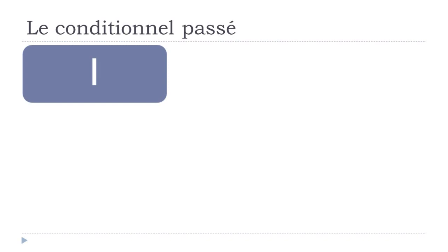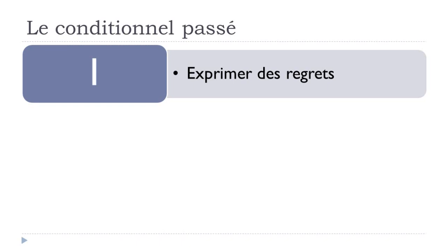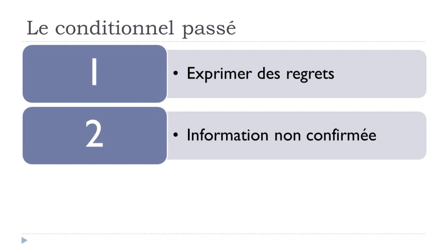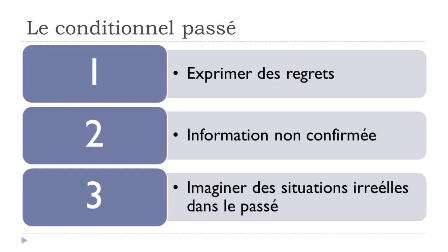First we'll see l'utilisation — when we use the conditionnel passé — and then la formation — how to build it. The first use is to express regrets — exprimer des regrets. The second use is for unconfirmed information — une information non confirmée. For instance, in the news when something happened but hasn't been fully confirmed. And the third use is to imagine unreal situations in the past — imaginer des situations irréelles dans le passé.